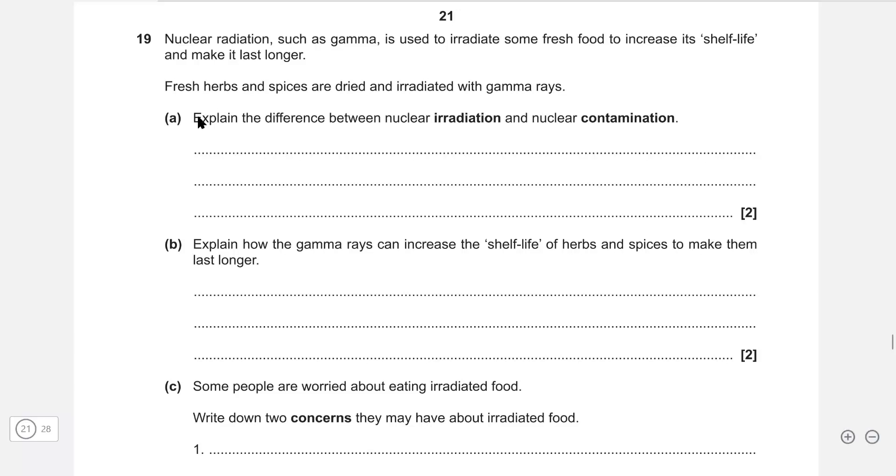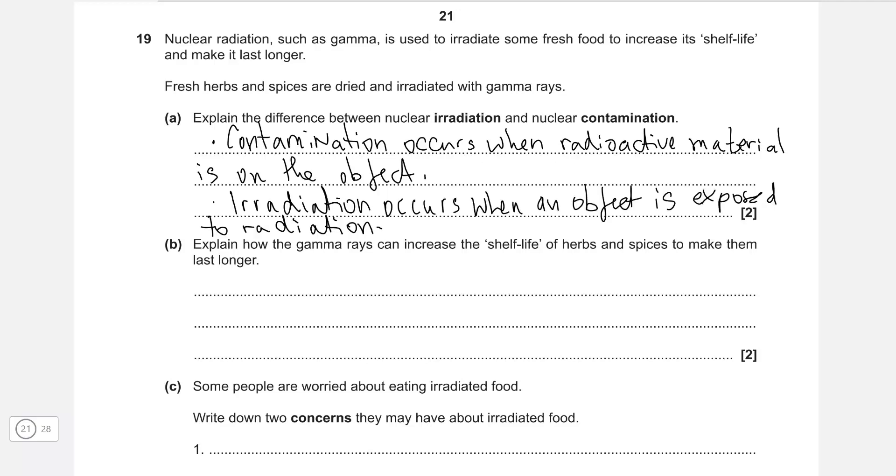Explain the difference between nuclear irradiation and nuclear contamination. Firstly, contamination occurs when radioactive material is actually on or in the object. And irradiation occurs when an object is just exposed to radiation.